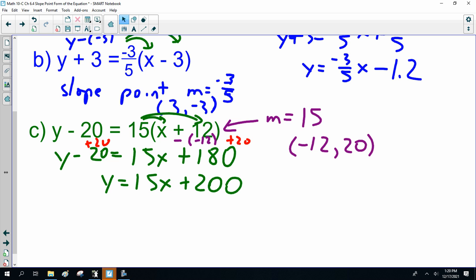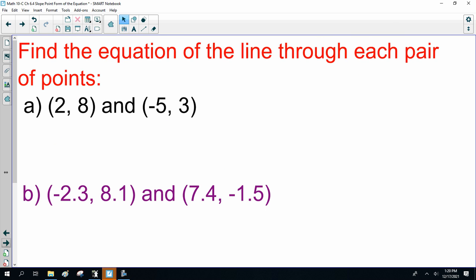Now, you see sometimes the slope point form is easier, such as life. Now, this video is getting too long, so let's just bundle through it. So, find the equation of the line through each pair of points.